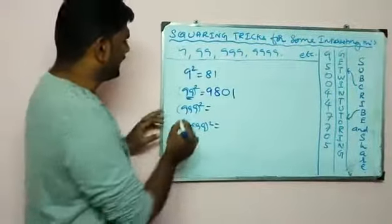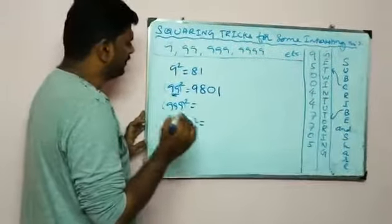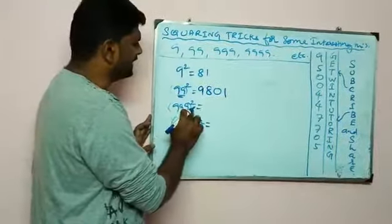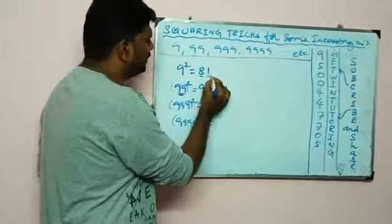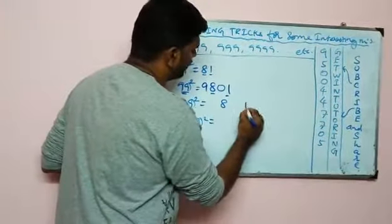Next one, 999 squared. We should keep in mind every result has 81. So 9 series, all results have 81. If you have three numbers, one count equals two.